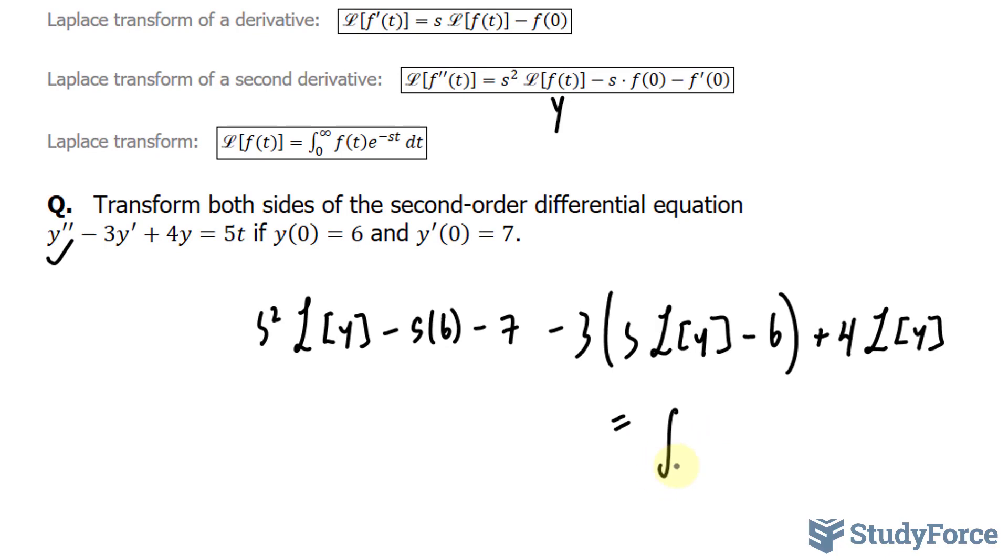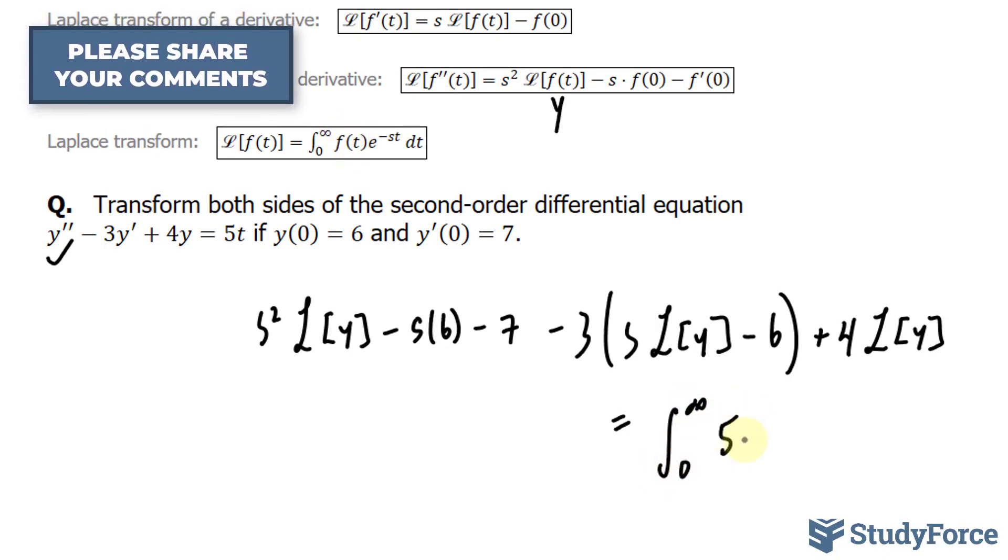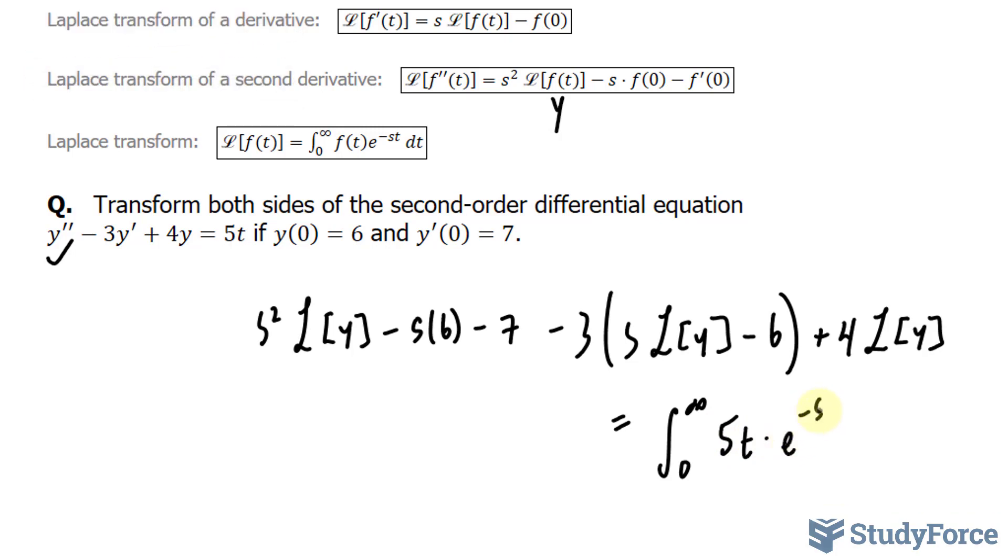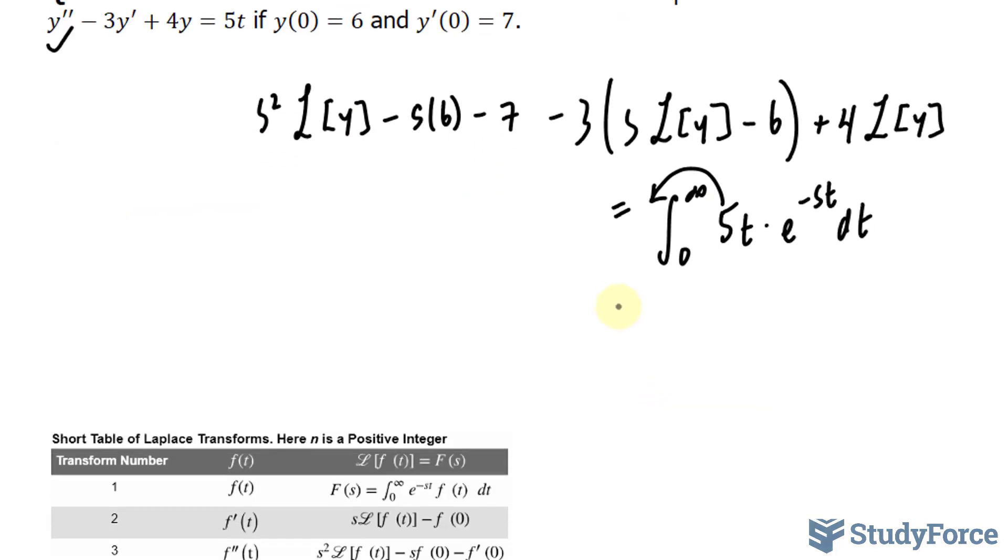The right side will be the integral from 0 to infinity of f(t), which is 5t times e^(-st) dt. If I move the 5 outside the integral, I get 5 times the integral from 0 to infinity of t·e^(-st) dt.